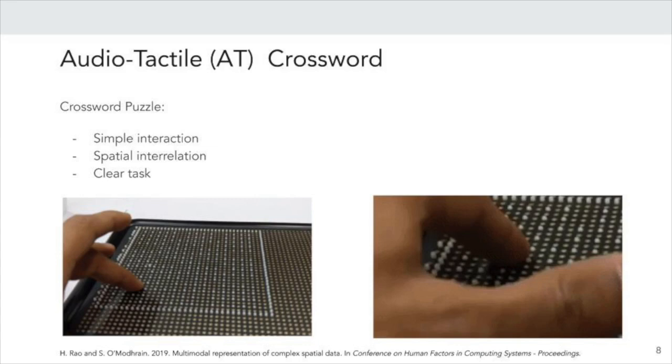We chose to use crossword puzzle as an example of spatial application because, number one, interactions are simple and consist of querying interaction to ask for information and erratic interaction to enter this information. Second, one must understand the interrelation between the words that intersect to be able to accurately solve the crossword puzzle. And finally, the task is defined quite clearly and the whole game is self-contained.